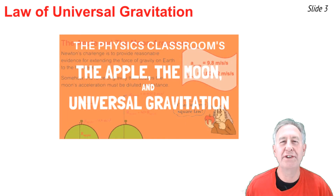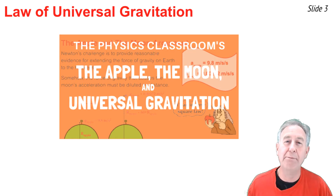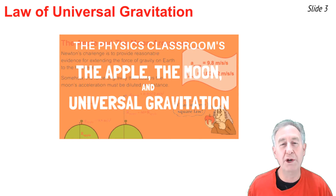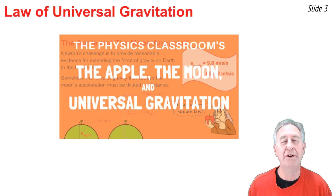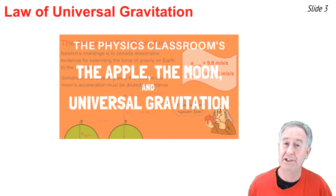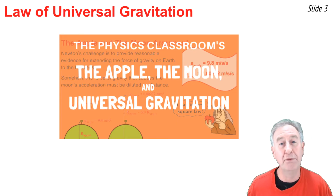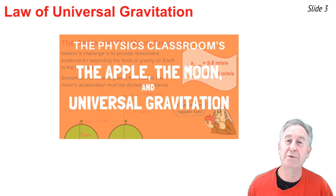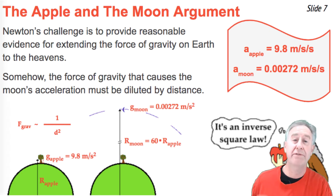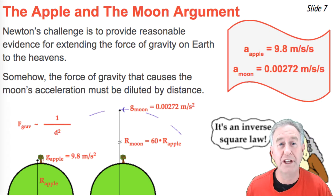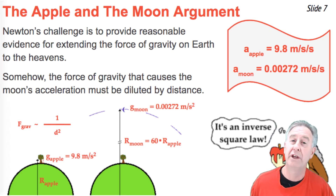In a previous video, I discussed Isaac Newton's Apple and the Moon argument that led to the claim that the force that caused the Moon to orbit the Earth was the same force that caused the Apple to free-fall to the Earth. This force was the force of gravity. In his argument, he used acceleration values known in the day for the Apple and for the Moon.